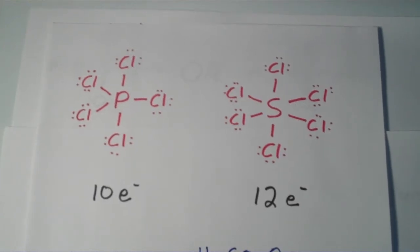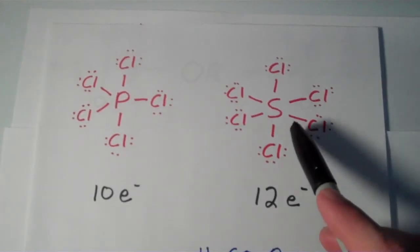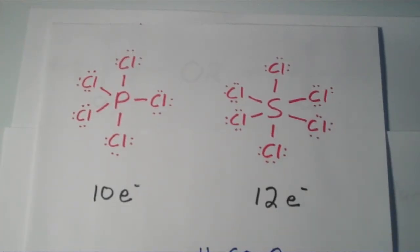Here we have the Lewis structures of phosphorus pentachloride and sulfur hexachloride. The phosphorus atom in phosphorus pentachloride has an expanded octet of 10 electrons. The sulfur atom in sulfur hexachloride has an expanded octet of 12 electrons.